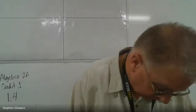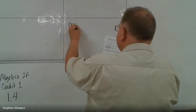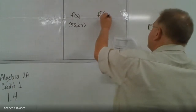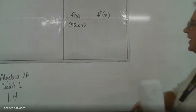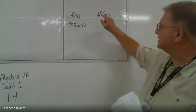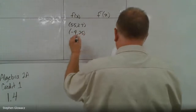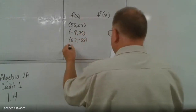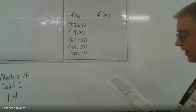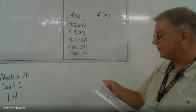The first thing we're going to do is at the very top of page 34. We've got a table showing the function f(x) with ordered pairs: (55, 27), (-9, 25), (67, -58), (-66, 55), and (100, -2). The other part of the table is for f⁻¹(x), the inverse function. That negative 1 up there means it's the inverse of f(x) — it's not an exponent, just the way they denote an inverse function.